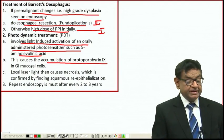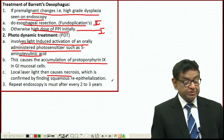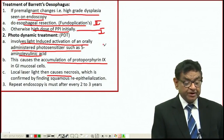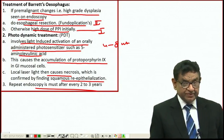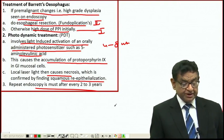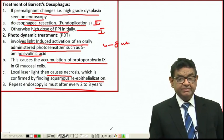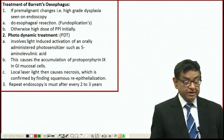Photodynamic treatment involves light-induced activation of an orally administered photosensitizer, like 5-aminolevulinic acid. This causes accumulation of protoporphyrin IX in GI mucosal cells, leading to necrosis, which is confirmed by finding squamous re-epithelialization. Repeat endoscopy must be done every two to three years when having a case of Barrett's esophagus. Ultimately, follow-up via repeat endoscopy is mandatory.